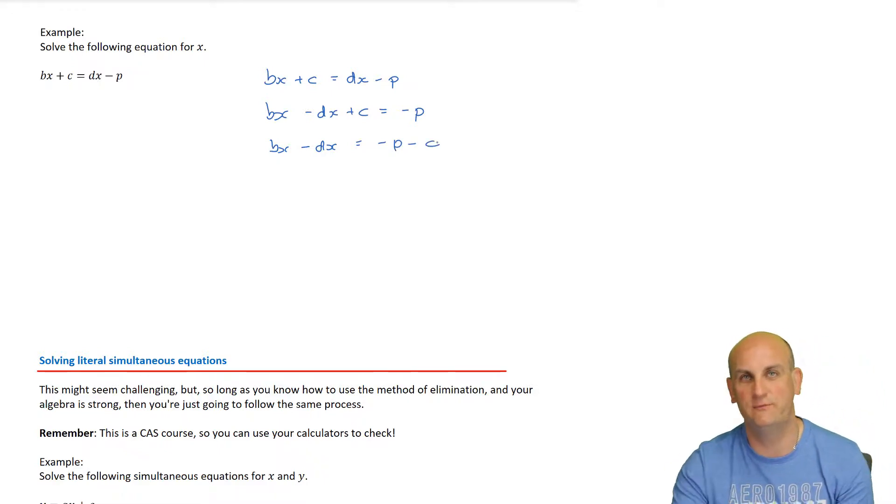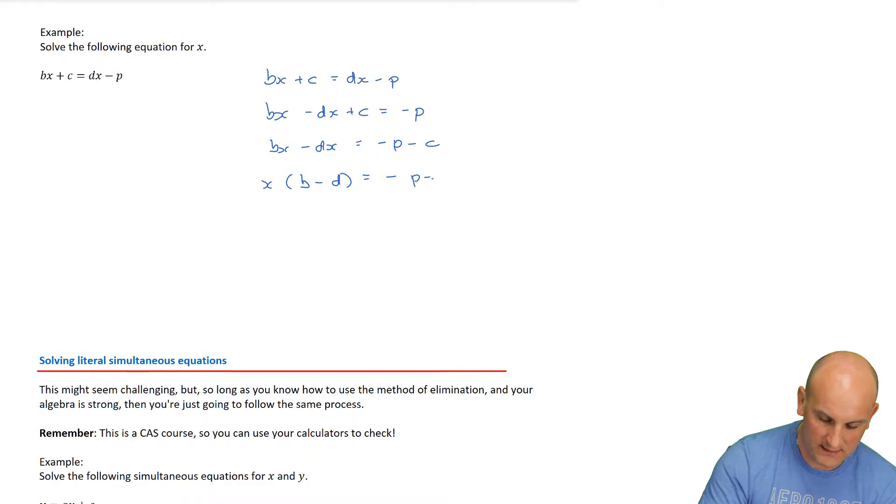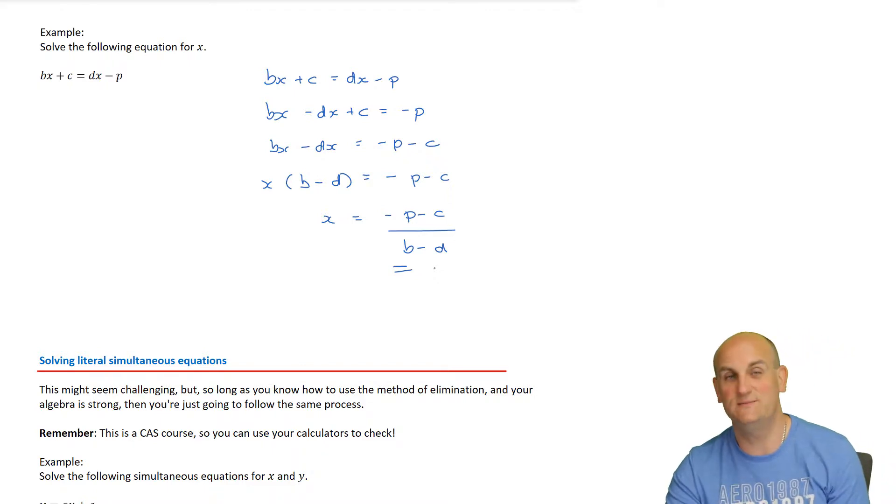What am I going to do now? Two becomes one. How do I turn two x's into one? I factorize. So I'm going to take an x outside. That leaves b minus d equals the negative of p minus c. To get x on its own, I can move that bracket underneath, which gives me negative p minus c all over b minus d. There we go. That's just making x the subject. This literal equation stuff is all algebra.